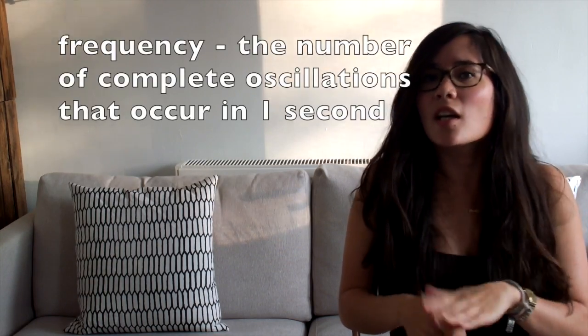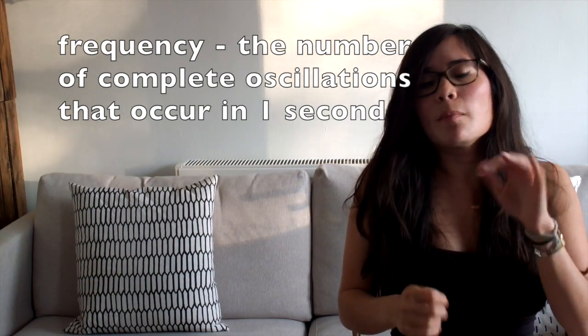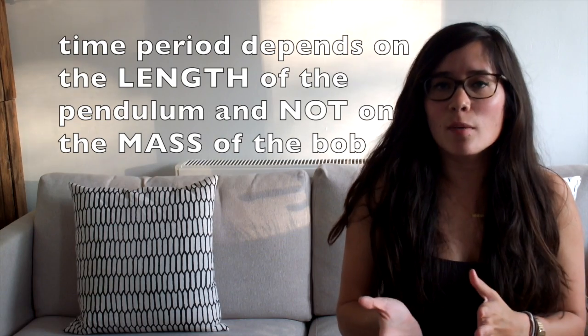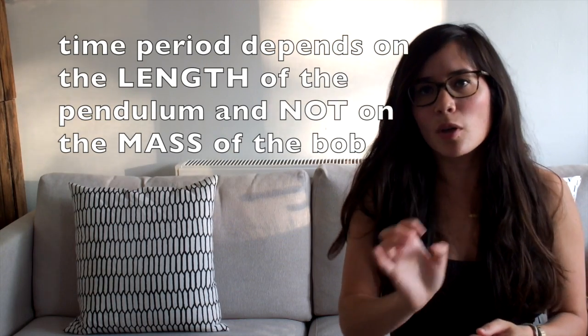Again, they may ask you for the frequency. Remember, that is the number of swings, complete swings that occur in one second. You may just need to manipulate that equation, but remember that frequency is measured in hertz. Also, remember that the time period is actually only dependent on the length of the pendulum, and it has nothing to do with the mass of the bob on the end. Just bear that in mind, because some of those questions involving data will touch on that.